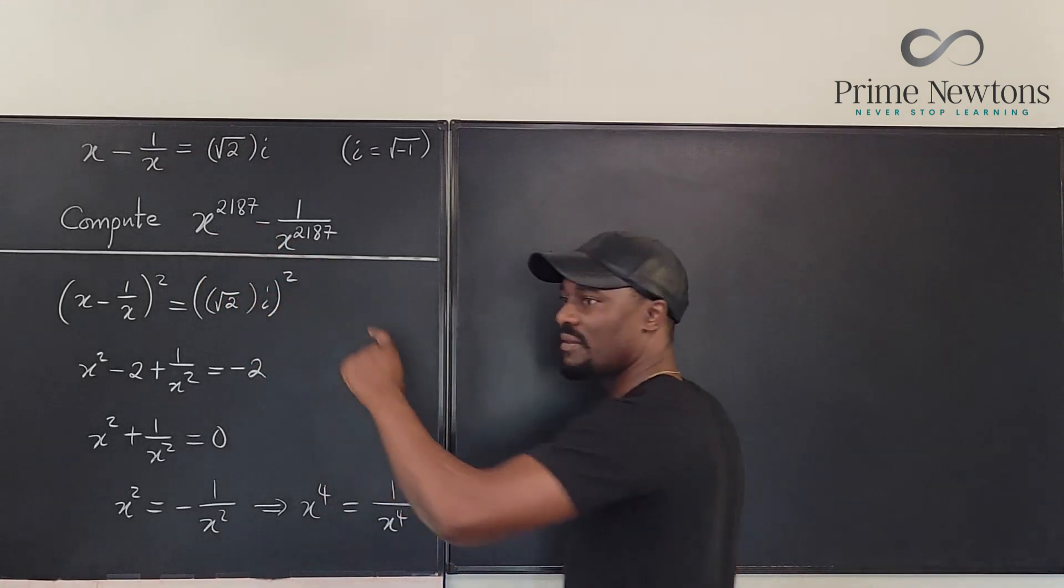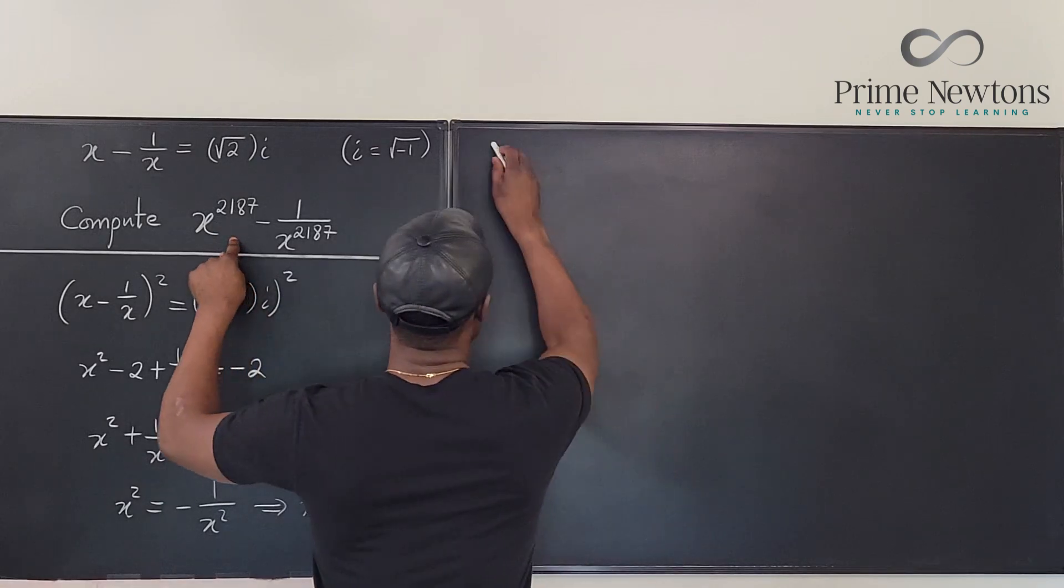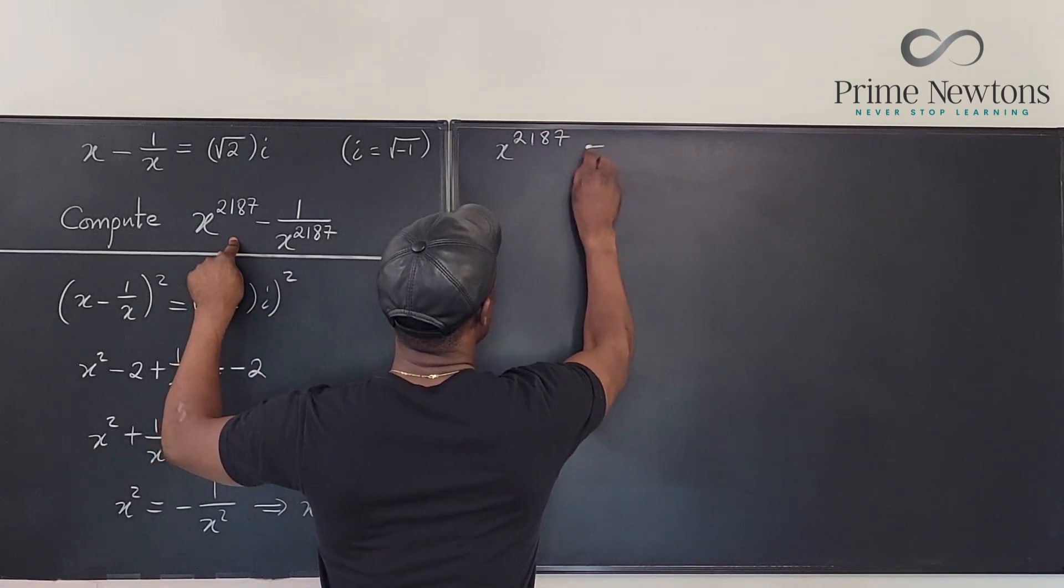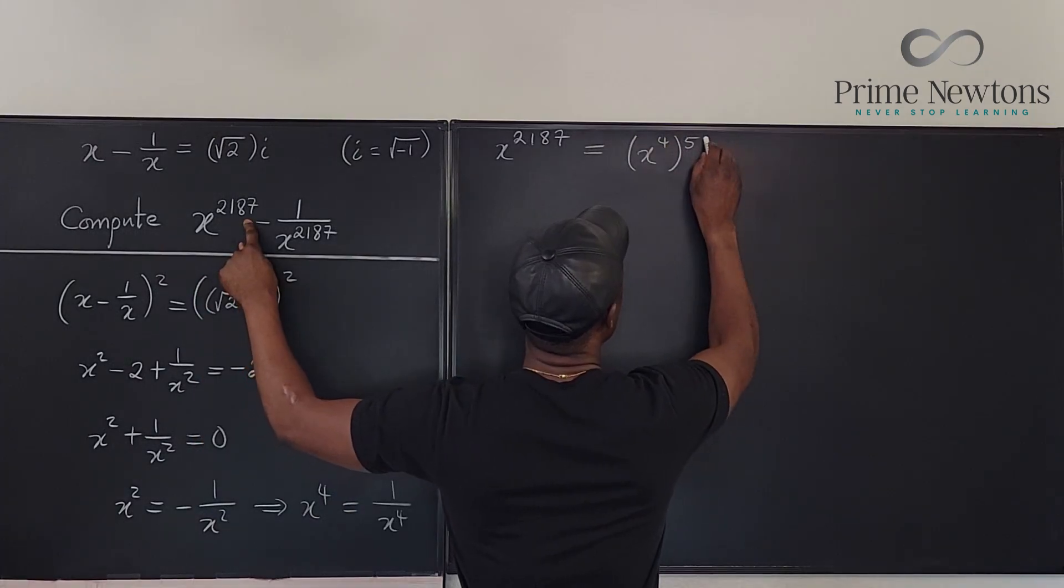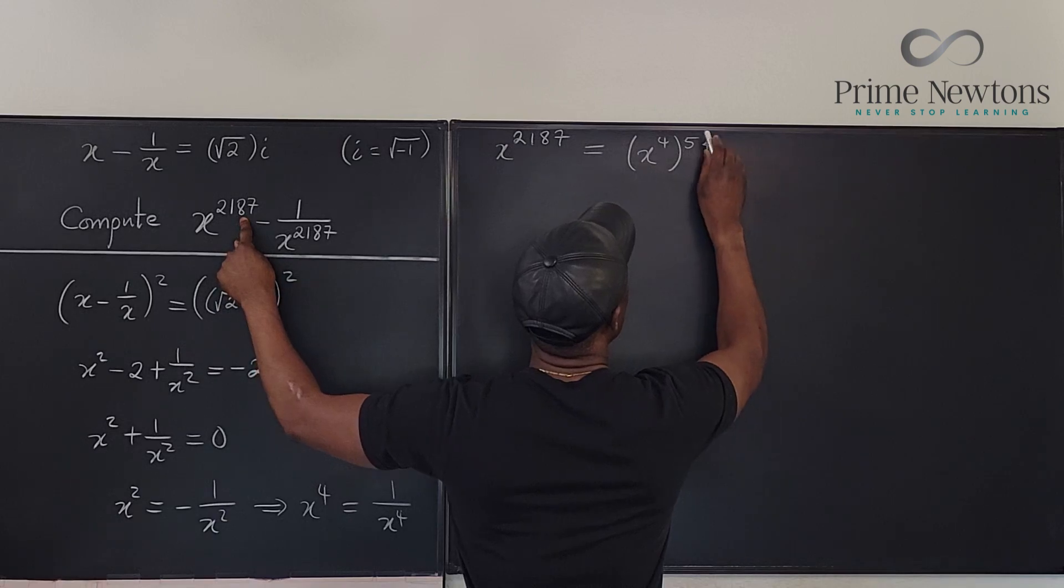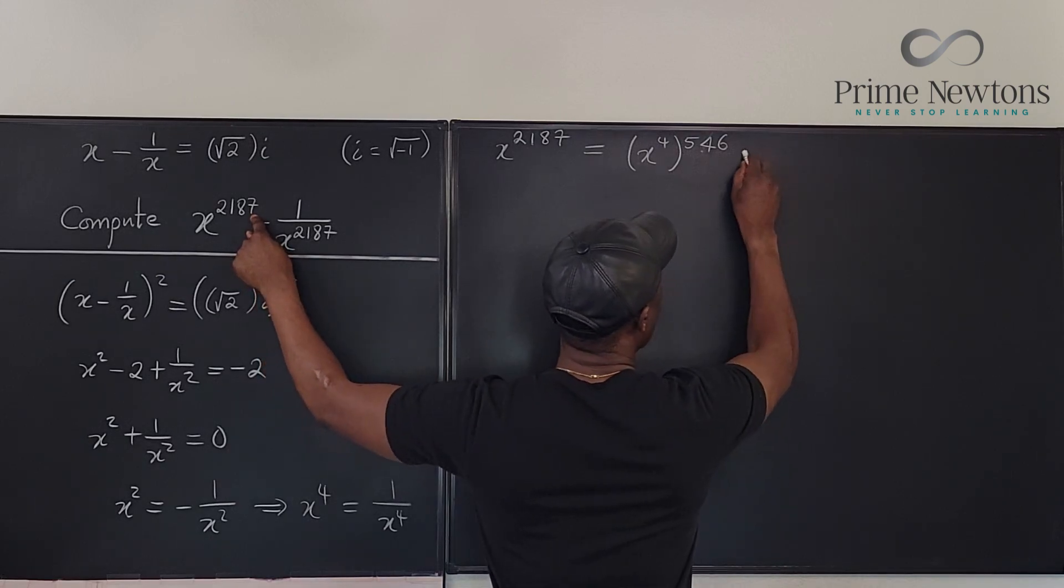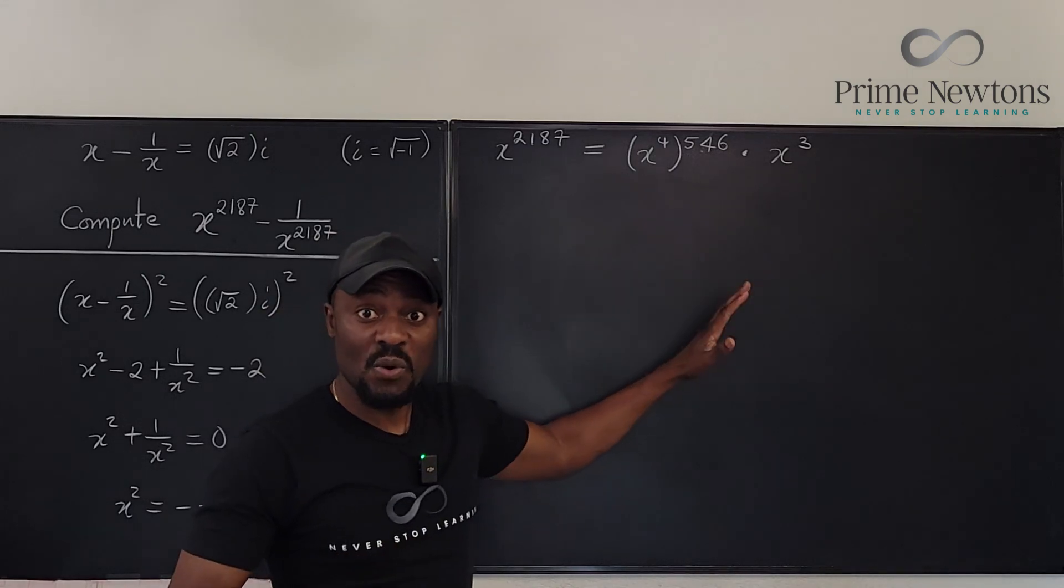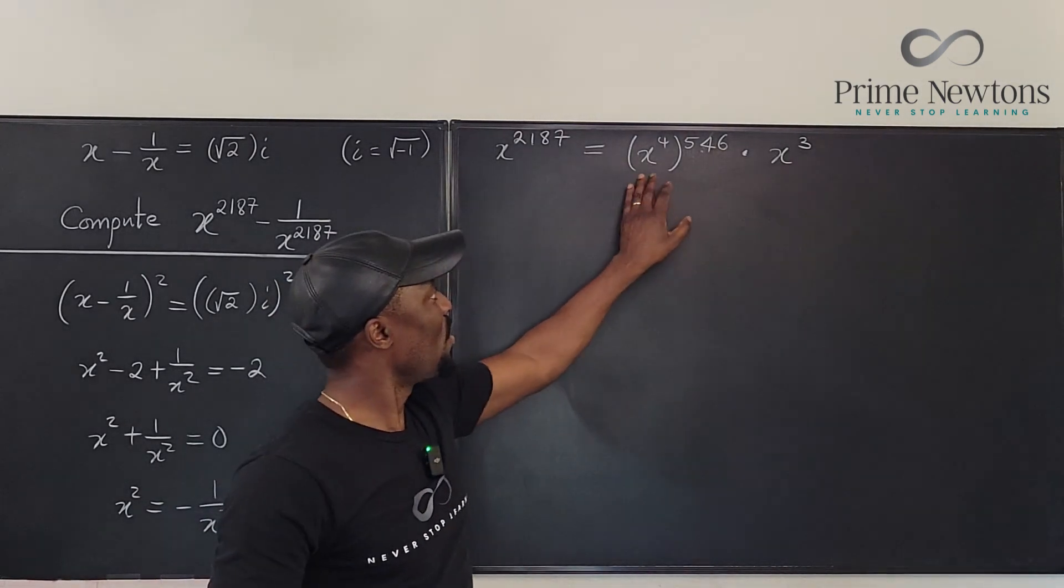Wait—if I know that x to the fourth is equal to 1 over x to the fourth, I might as well write this in terms of x to the fourth. How many x to the fourth can I get here? So let's go here. We can say that x to the 2187 is the same thing as x to the fourth raised to 546, okay? We're still going to have a remainder of 3, so we can write it times x cubed. So if you write this mod 4, this is basically x cubed.